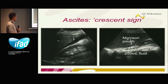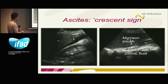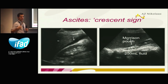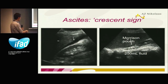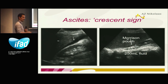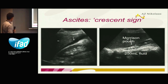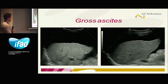Then ascites — very important. If there is only a small amount of ascites, you will appreciate it in the Morrison pouch, between the right kidney and the liver. You will see the crescent sign — this is only 250 milliliters of fluid. When there is a little ascites you see it here. As it increases, you see the liver swimming in a black pool — this is already a little more ascites, and this is a lot of ascites.